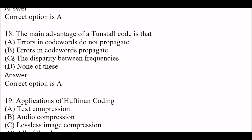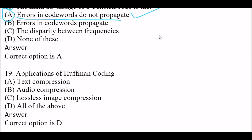Next question: The main advantage of a Tunstall code is that — Option A: errors in code words do not propagate. Option B: errors in code words propagate. Option C: the disparity between frequencies. Option D: none of these. The right answer is Option A, errors in code words do not propagate.